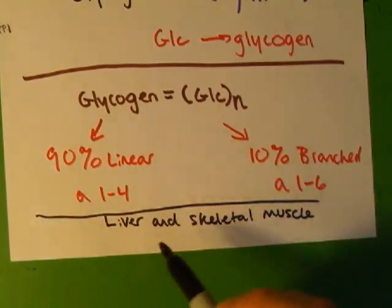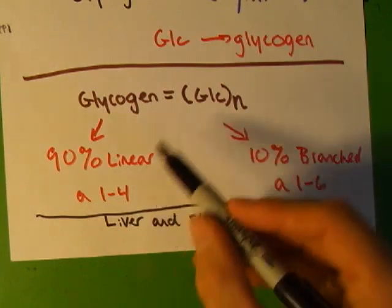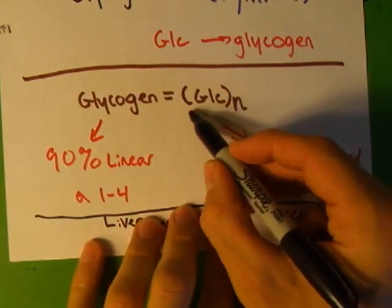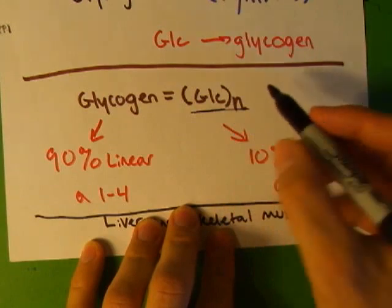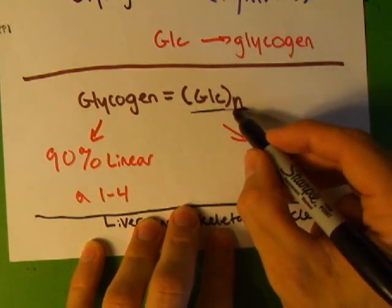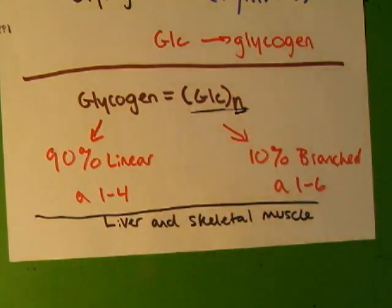A quick review about glycogen. It's going to be written like this a lot: glucose in parentheses with an N, just meaning it's a bunch of glucose molecules. There's some number of them, it doesn't really matter.